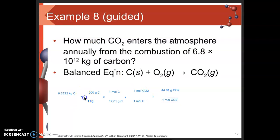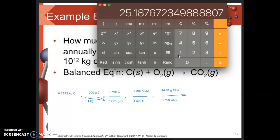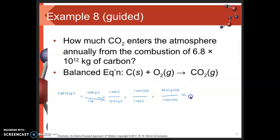Getting out my calculator: 6.8 × 10^12 multiplied by 1,000, multiplied by 44.01, divided by 12.01. I get 2.5—two sig figs here because we only started with two—2.5 × 10^16 grams of carbon dioxide.